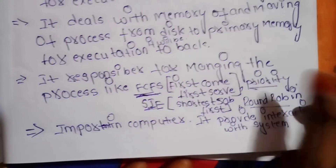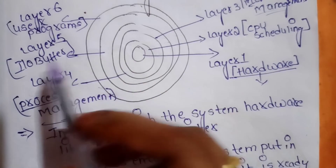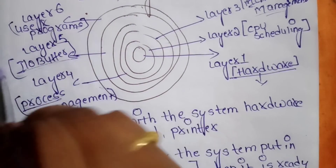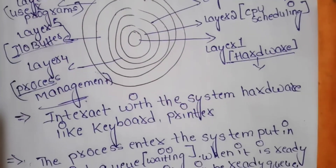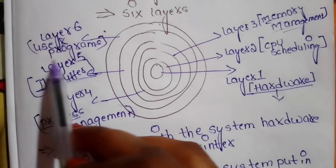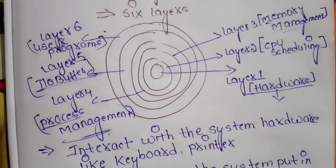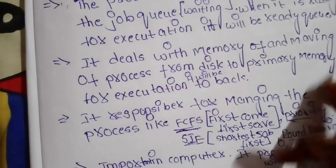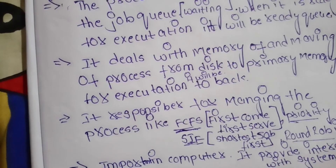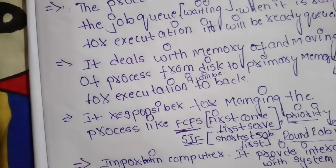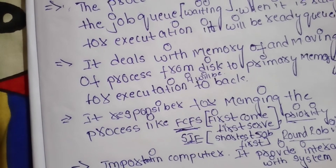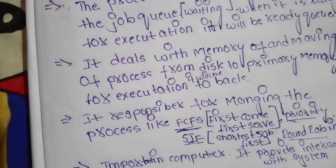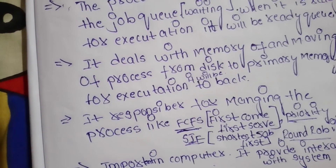The last layer is user programs. User programs include applications, games, browsers, and so on. As the name says, user programs are the applications used by the user, such as browsing and gaming.